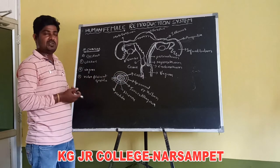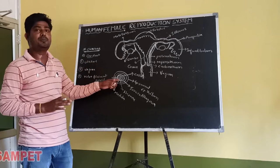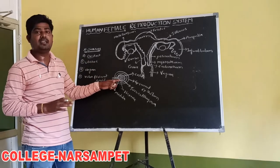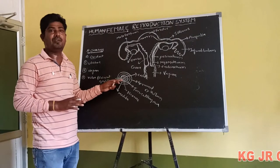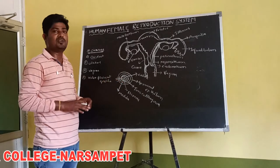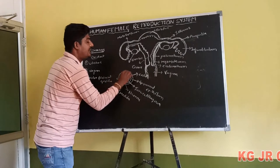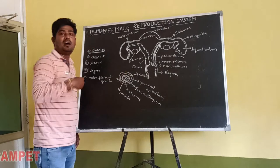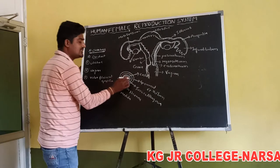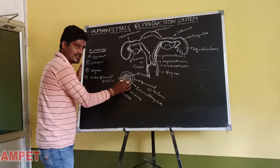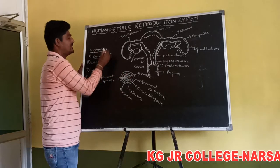The ovary functions include: ovulation, production of female gametes, and also production of ovarian steroidal hormones. This covers the location, structure, and function of ovaries.